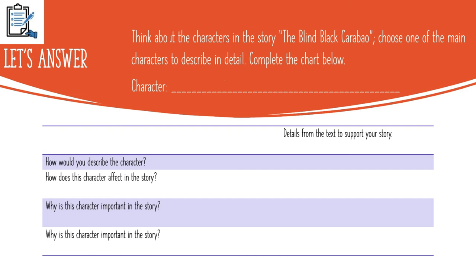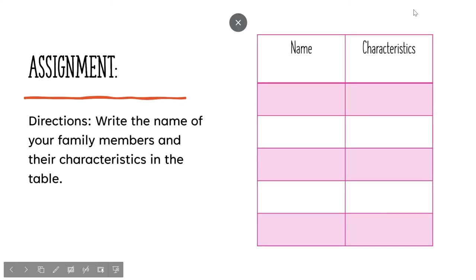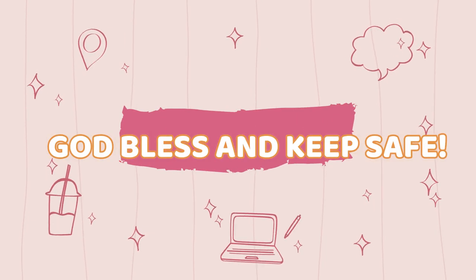Think about the characters in the story 'The Blind Black Carabao' and choose one of the main characters to describe in detail. Put the character's name, then describe the character — how does this character affect the story, and why is this character important in the story? For your assignment, write the names of your family members and their characteristics in the table: in this column, put the names of your family members, and in this column, write their characteristics. That's it for today. Thank you for listening and have a good day. God bless and keep safe, everyone.